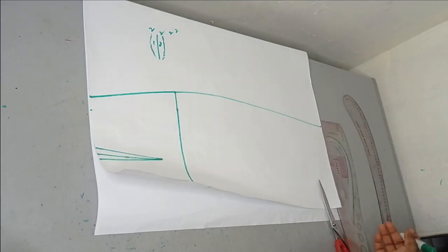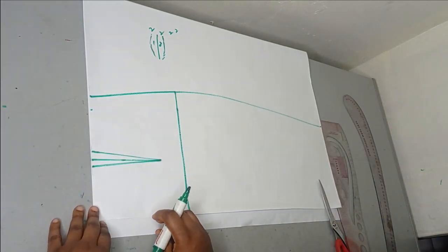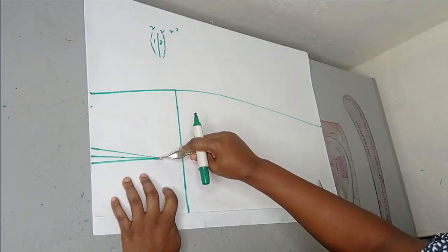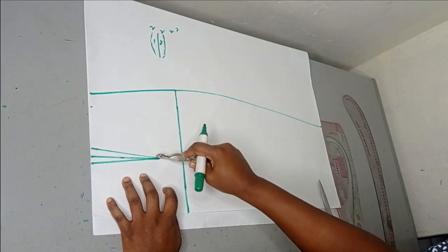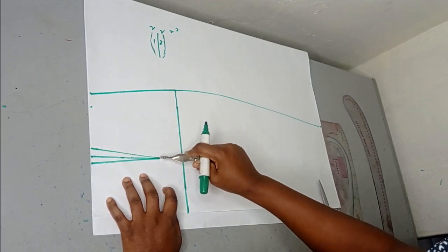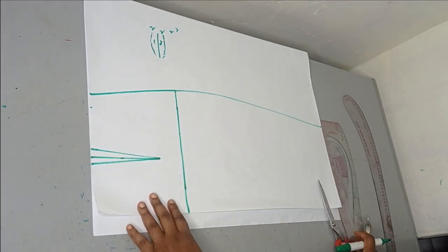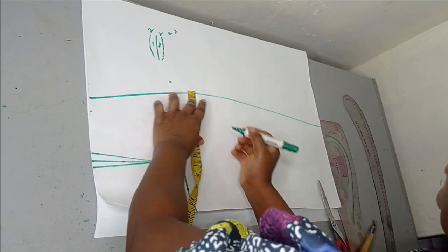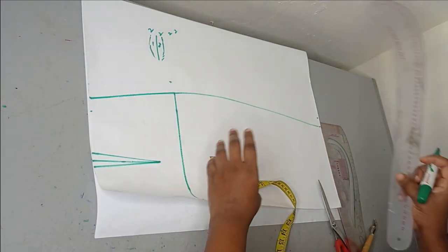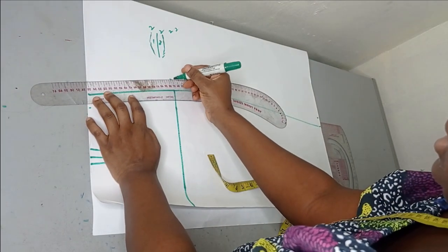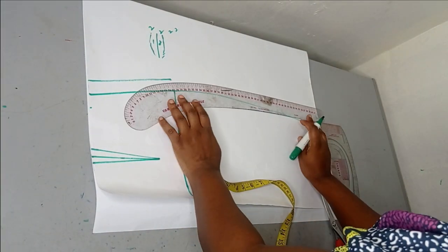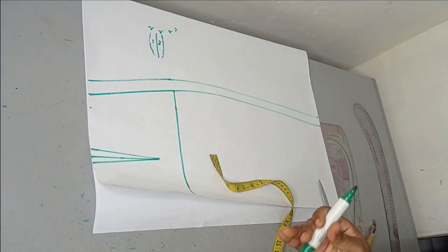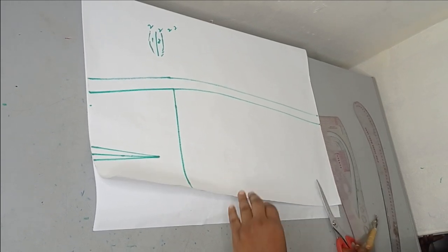The skirt is basically almost ready. You may want to transfer the dart to your back part using your tracing wheel — just trace the dart so that when you remove your pattern you'll know where the dart is. The skirt is done. Now we just need to add seam allowance — I'm going to be adding 1 inch seam allowance. If you are not adding allowance, note it on your pattern so when transferring to fabric you'll know there's no allowance. Now we just need to cut this out and our skirt block is ready.